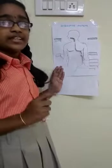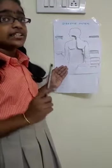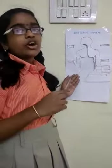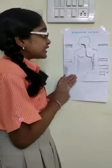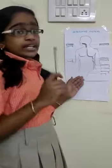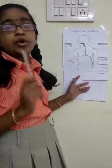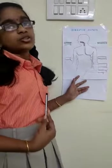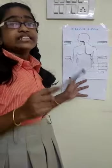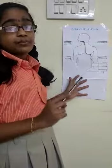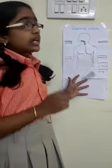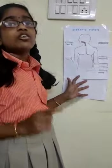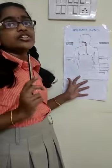The tongue helps in tasting the food as it has different taste buds on its surface. Saliva helps in moisturizing the food, which makes it easier to swallow. Saliva is secreted from the salivary glands. Saliva also helps in the breakdown of starch into sugar.